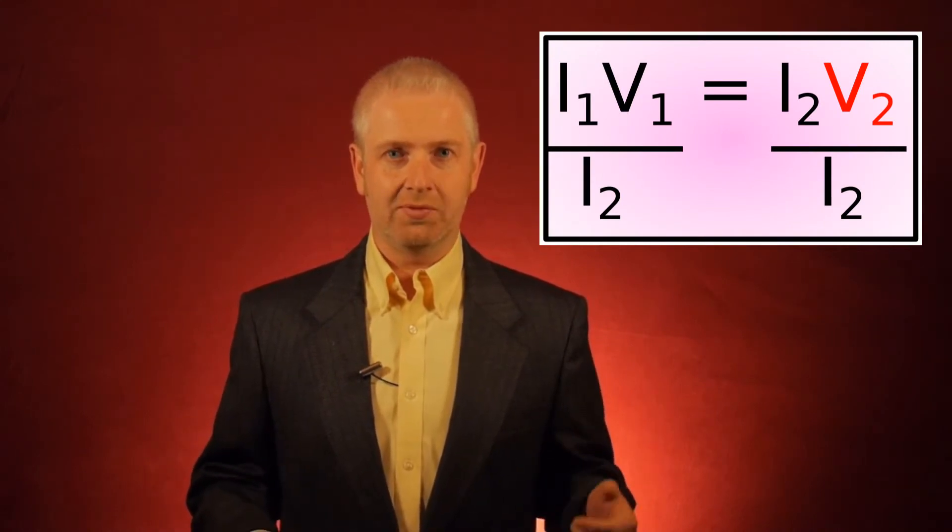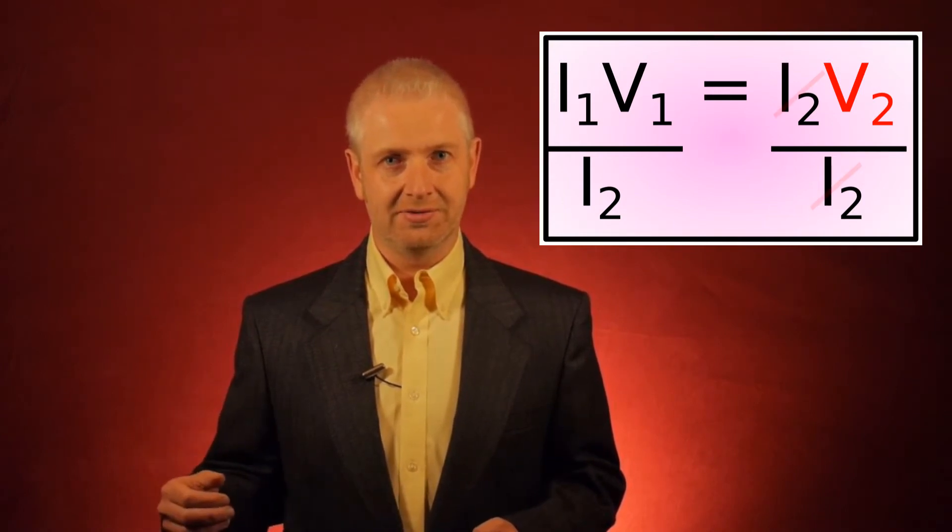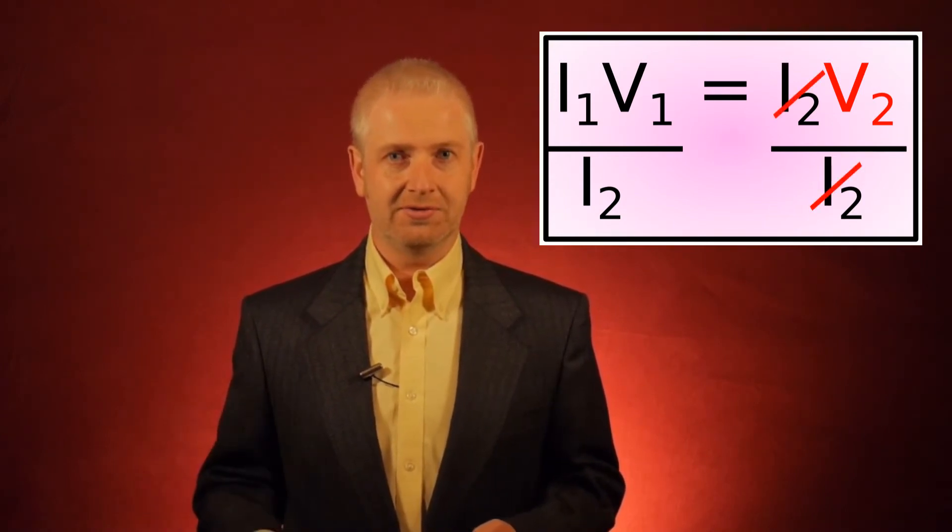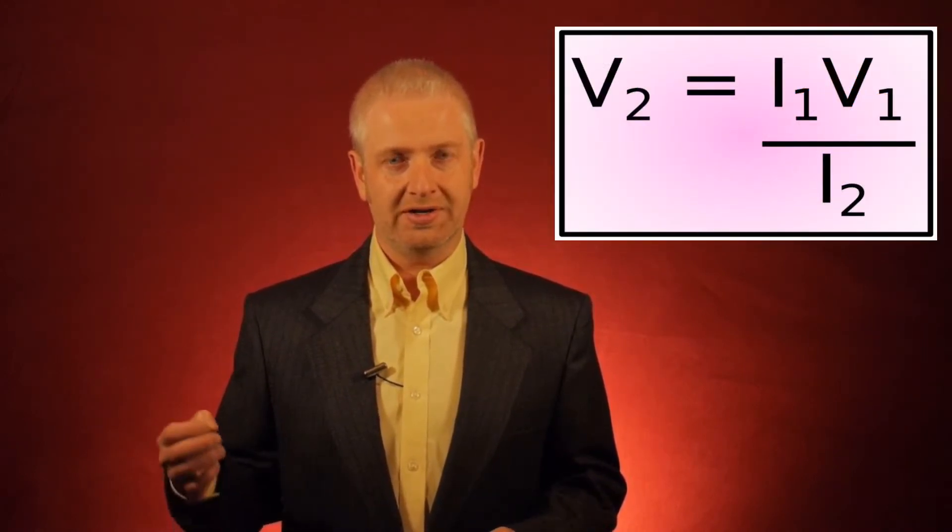That would give me I1 times V1 divided by I2 equals I2 times V2 divided by I2. And of course, I2 divided by I2 is 1. So that would tell me then that V2 equals I1 times V1 divided by I2.